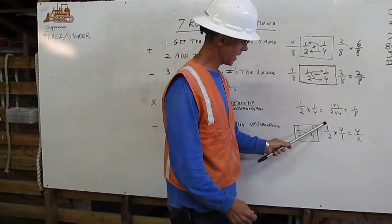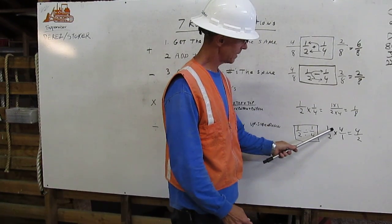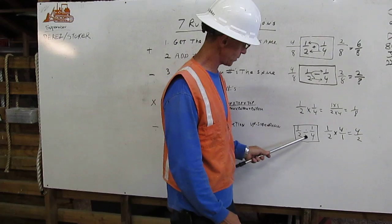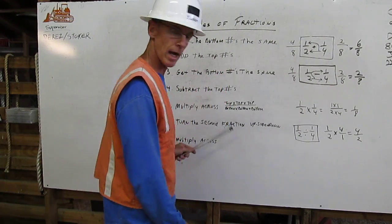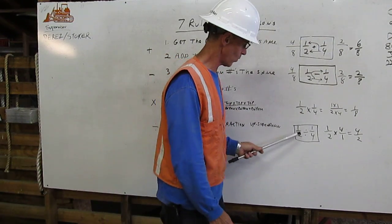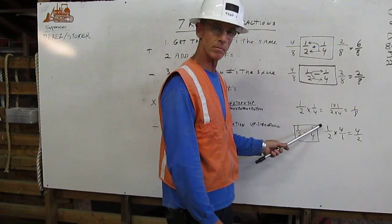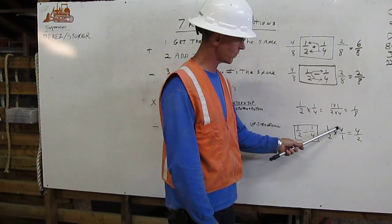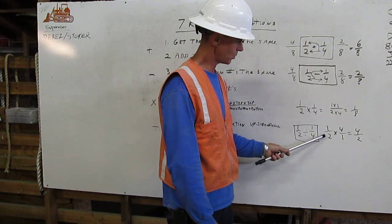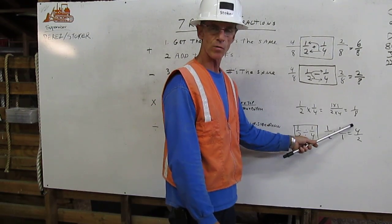So we have one-half times four over one. So we took the one-fourth, we turned it upside down. One-half times four over one. Now we take the multiplication. One times four equals four. Two times one equals two. Four over two.